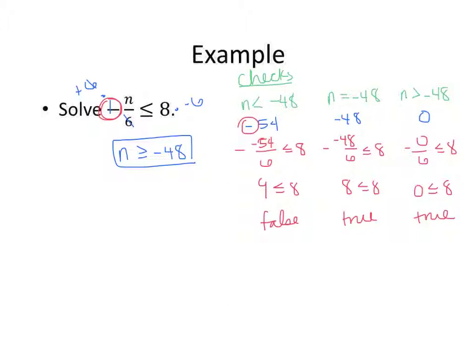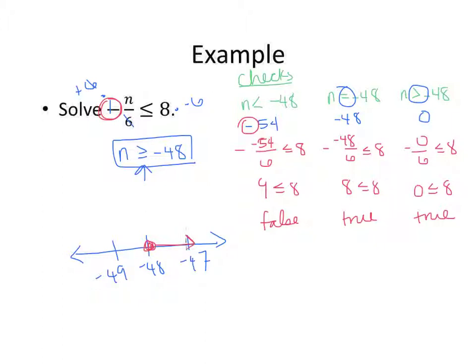The two that worked are the equal to case and the greater than case. If you're asked to graph it, use at least one number on either side. This one is also a closed circle with an arrow to the right — those are the numbers greater than negative 48.